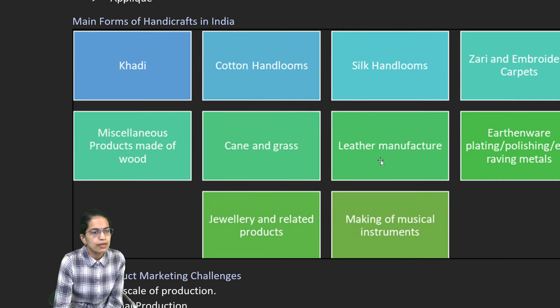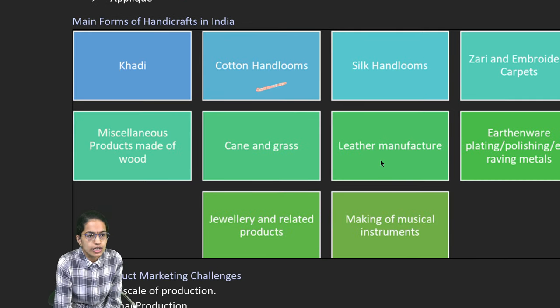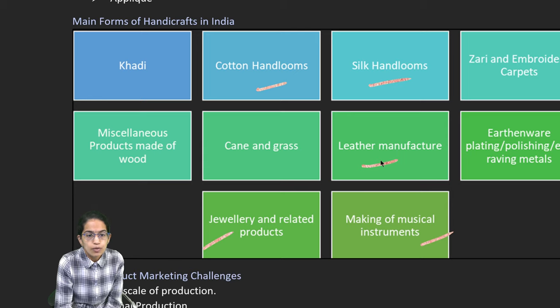Basically, when we focus on handicrafts, it includes cotton, silk handlooms, leather manufacturing, musical instruments, toys, jewellery products, pottery, embroideries, carpets, khadi, and wood products.